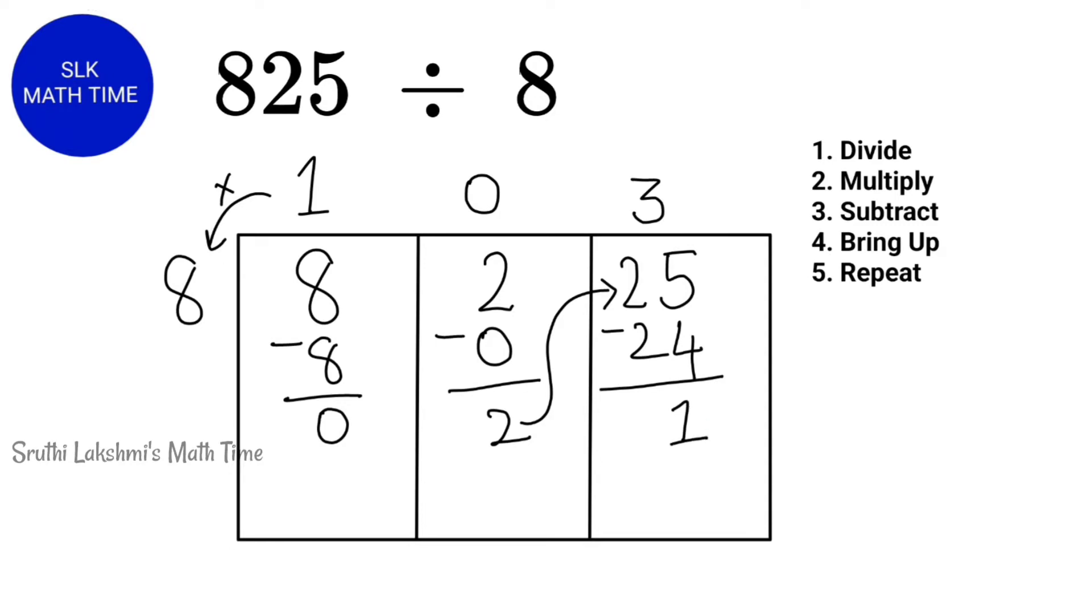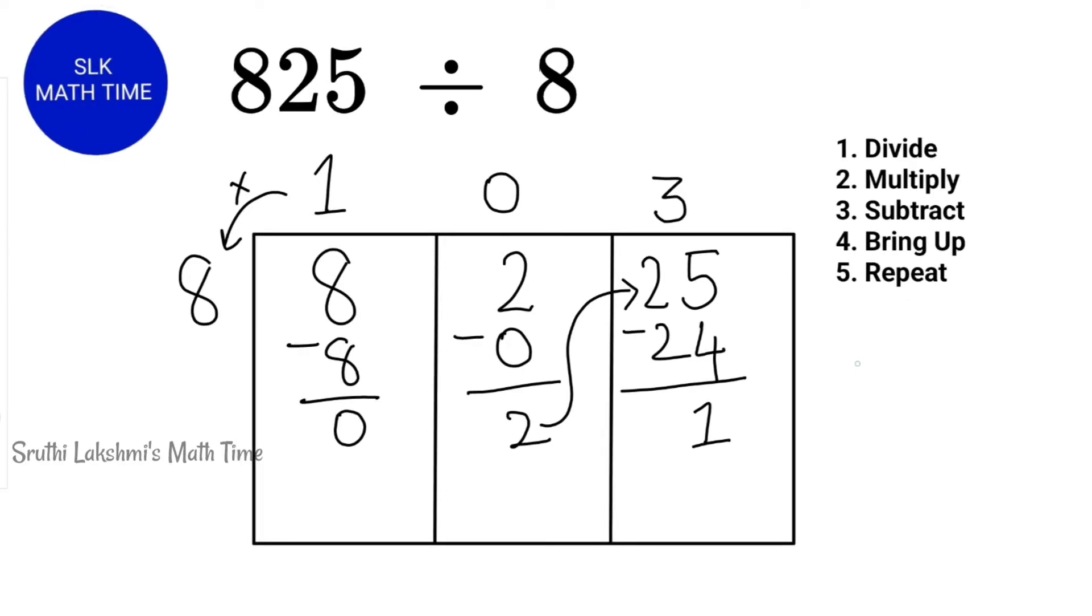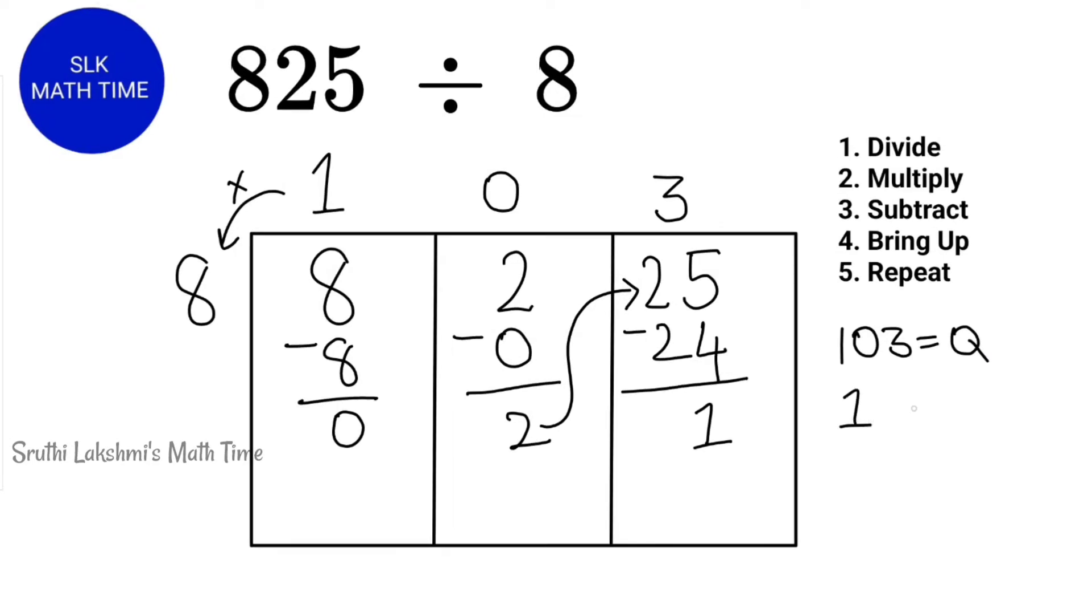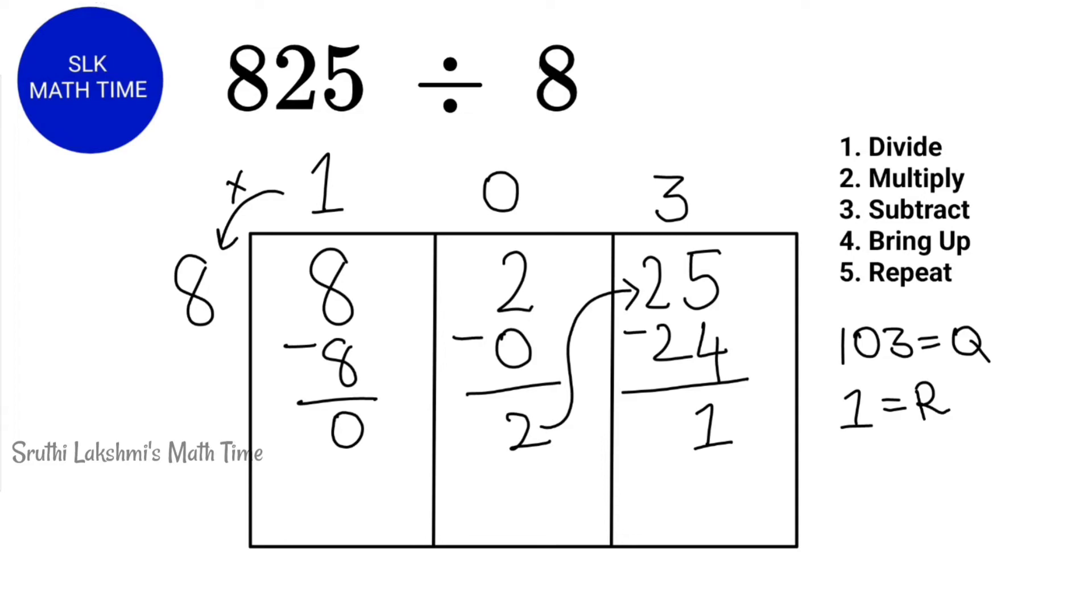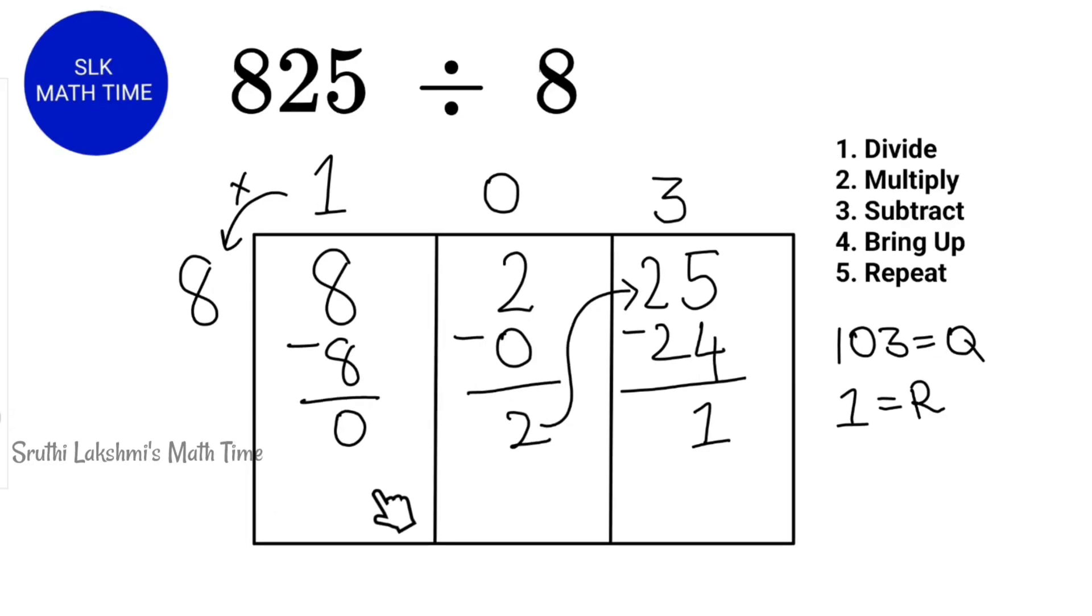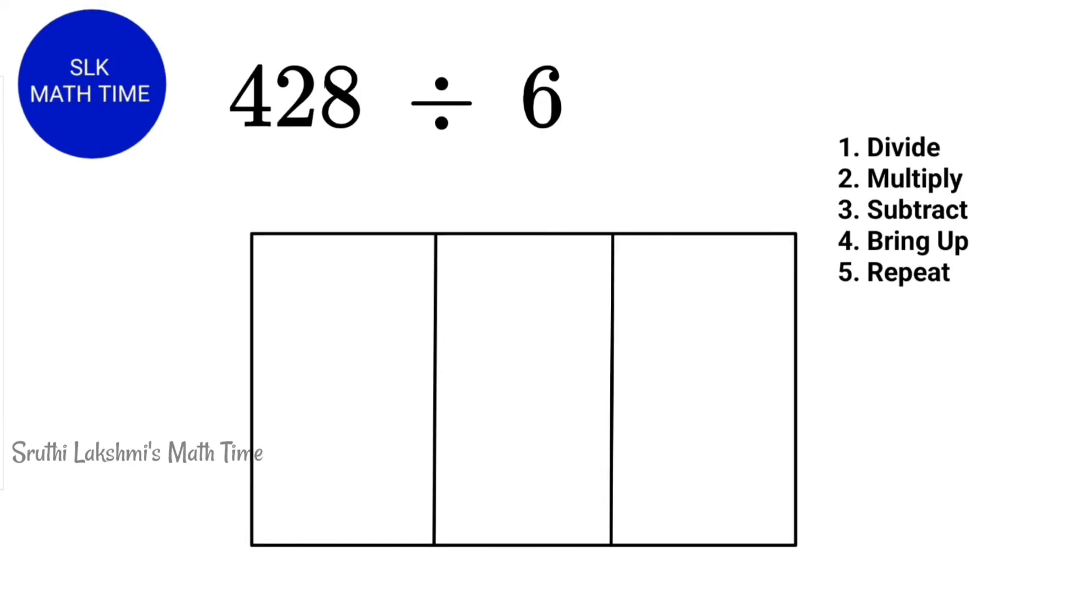Now, instead of a 0 like the last equation, we have a 1 here. So, that means this number is our remainder. And the top numbers 103 are our quotient. So, the answer to this problem is quotient 103, remainder 1. Now, we are just going to ignore these 2 numbers.